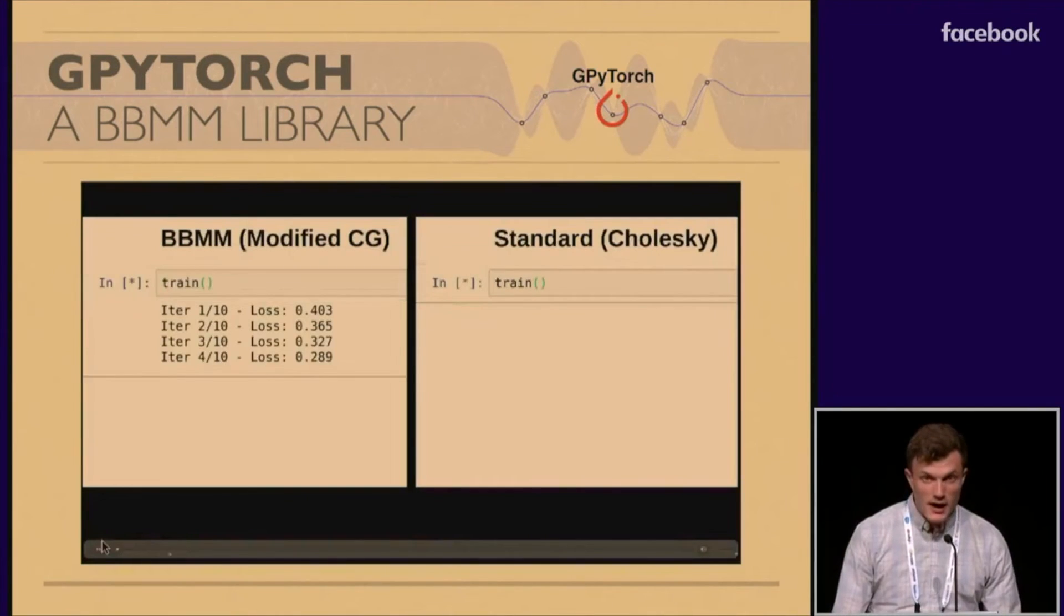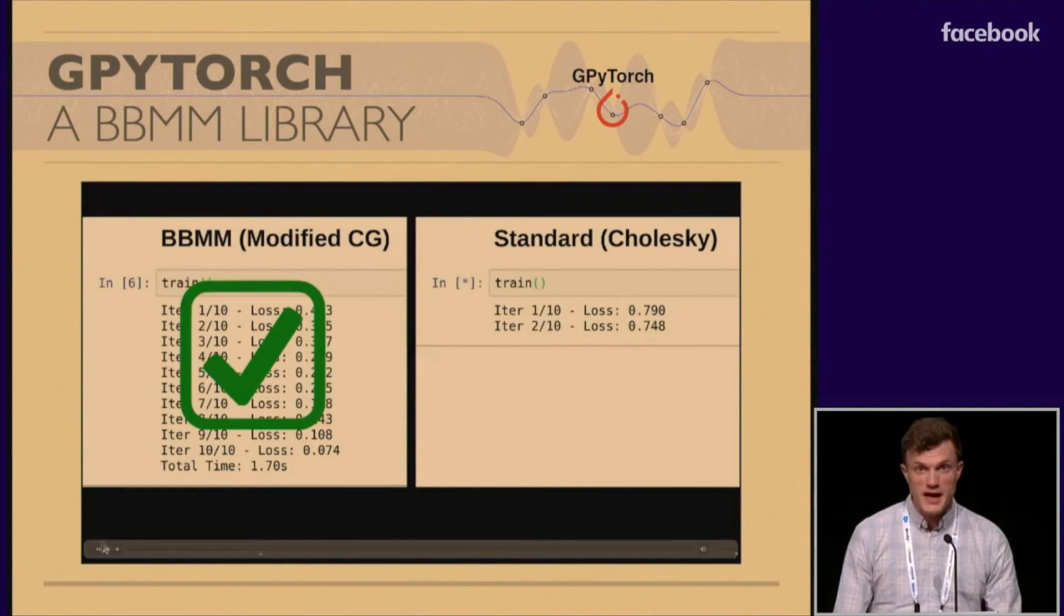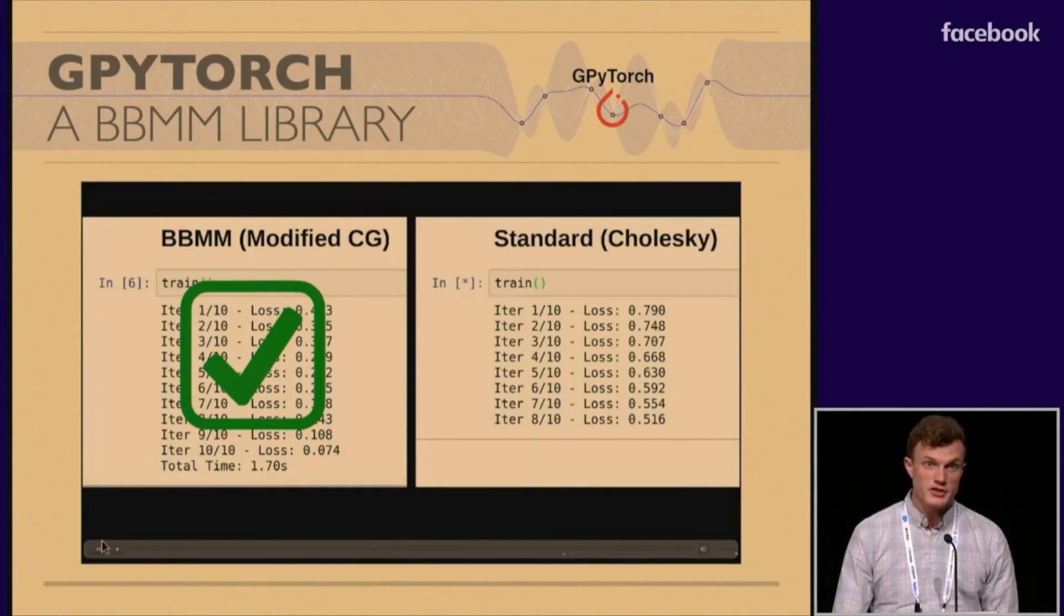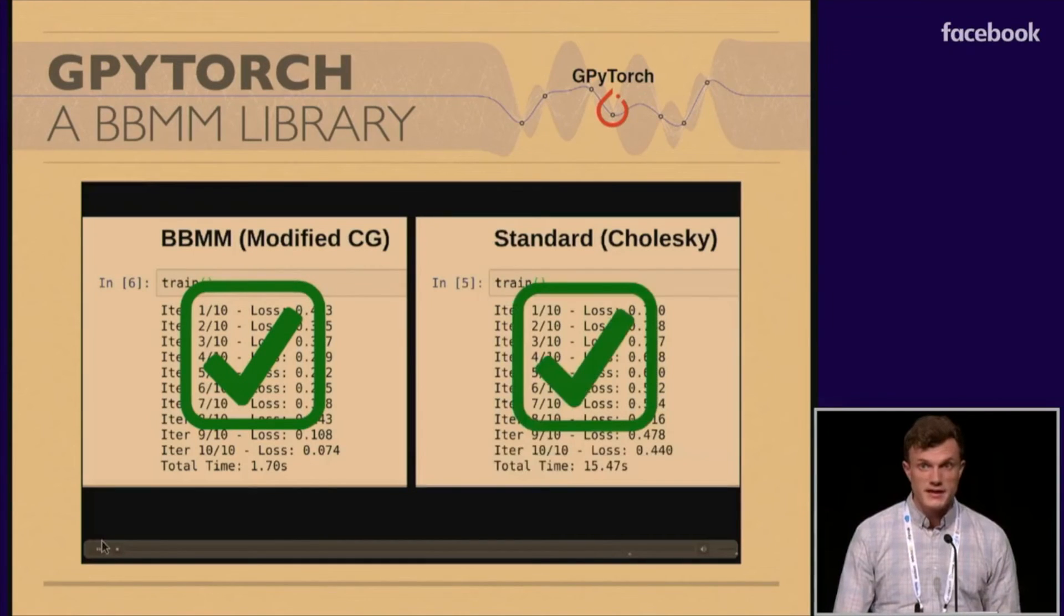On the left we have an exact Gaussian process training on 10,000 data points, and it does that in just a little bit over two seconds using BBMM and GPyTorch on a GPU. On the right we have standard inference, which is also GPU accelerated, but what we find is that takes about ten times as long. And we see similar speed ups for a variety of these other GP models.